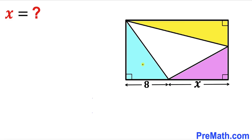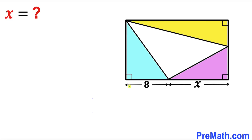Welcome to pre-math. In this video we have these three shaded triangles fully confined in this rectangle, as you can see in this diagram. We are talking about this blue triangle, this purple triangle, and yellow triangle, such that the area of all these shaded triangles is equal. If the area of this blue triangle is A, then the area of this purple triangle is A and this yellow triangle is A as well. Furthermore, this line segment is 8 units whereas this line segment is x units, and now we are going to calculate this distance x.